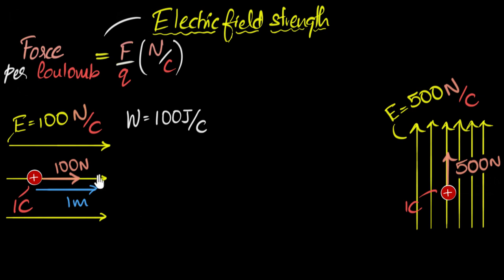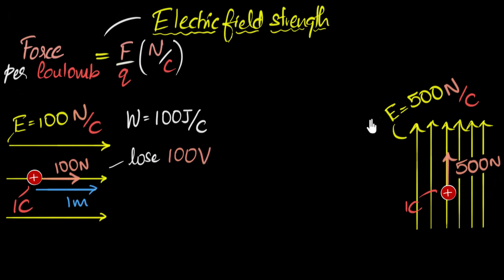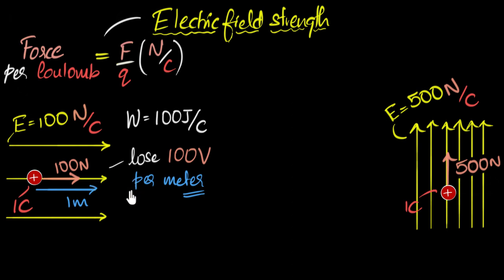All of that 100 joules will get converted into kinetic energy. Another way of saying that is: as I go forward by one meter, we will lose 100 joules per coulomb — 100 joules of potential energy per coulomb, meaning 100 volts. Joules per coulomb is also called volts. So I could say 100 volts per meter — for every meter that I travel forward, I would lose 100 volts of potential in this electric field.